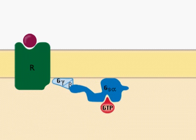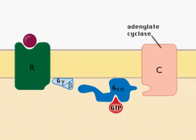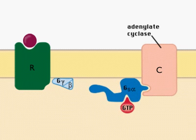The GS-alpha-GTP complex dissociates from the G-beta-gamma subunits, then binds and activates adenylate cyclase.